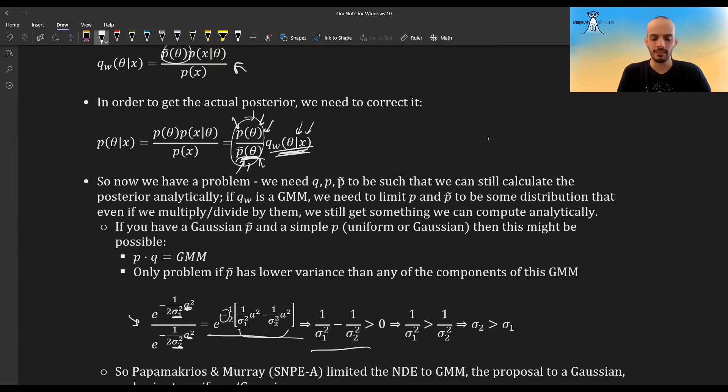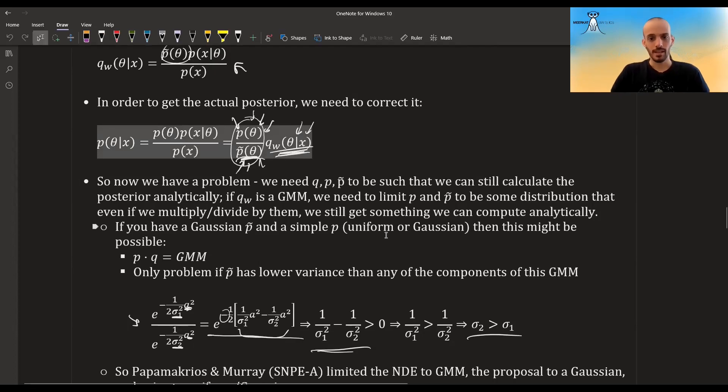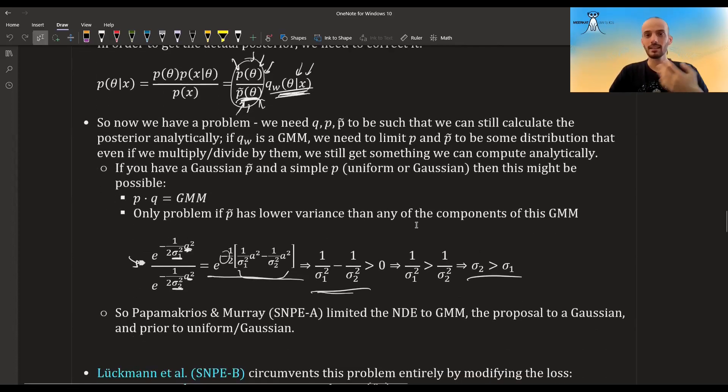So if we want this to be positive, it means that we want that the variance of the proposal to be bigger than the variance of the GMM. So this is some problem which might not always happen.